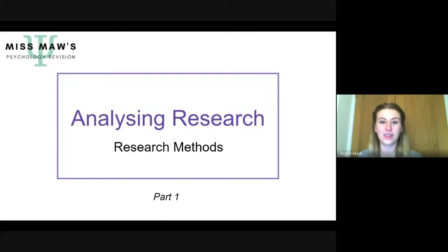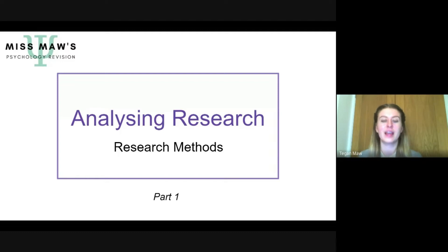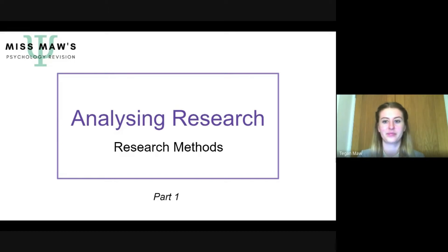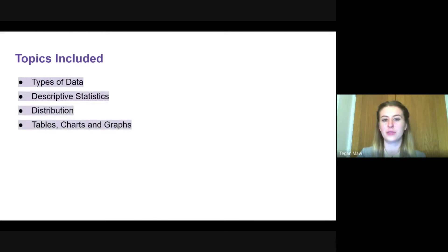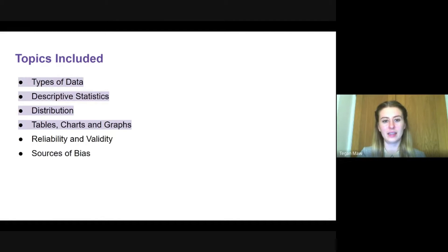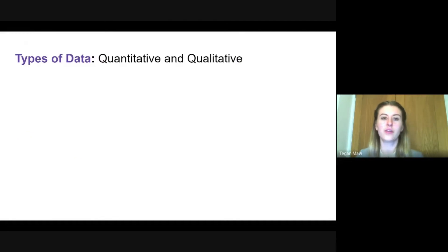We are now going to look at the third part in the research methods section, titled 'Analyzing Research.' I've had to split this up into two parts: the first part is going to look at the math skills involved, and the second part will look at reliability, validity, and bias. Topics included are types of data, descriptive statistics, distribution, tables, charts, and graphs — the latter two will be in a later video.